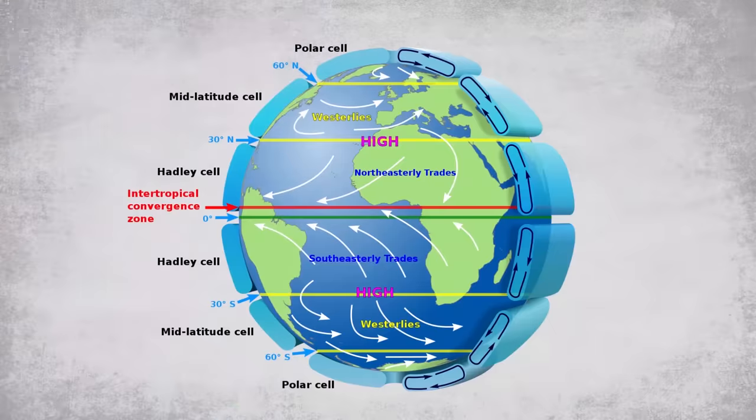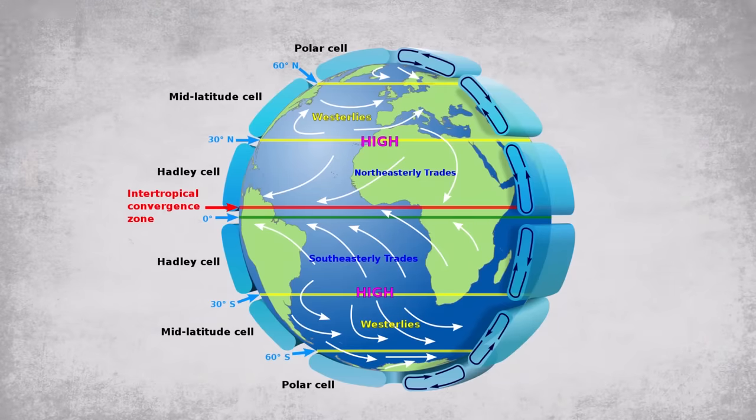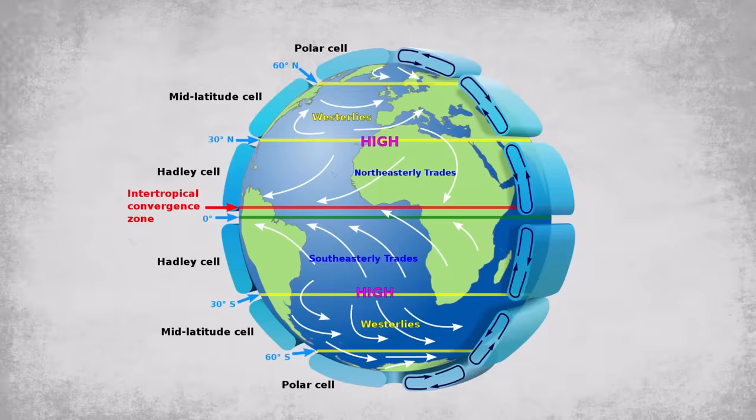Unequal heating also drives much of the global climate, because sunlight doesn't just heat the ground — it also heats the air. When heated, the molecules of air expand, becoming less dense, and rise. As those molecules get higher up in the atmosphere, they begin to cool down, become denser again, and sink. These rising and falling air masses create global wind patterns that act like enormous conveyor belts, transporting not just heat but also moisture all over the planet.